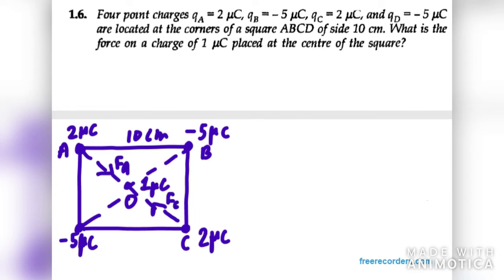Now we have B and D that are negatively charged, so it will be towards the charge. So FB will be in this direction and FD will be in this direction.